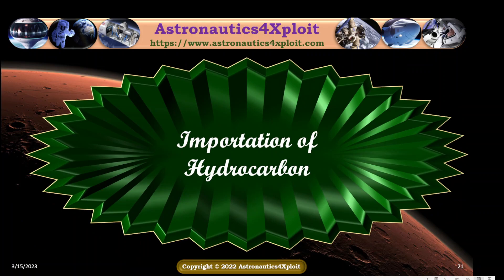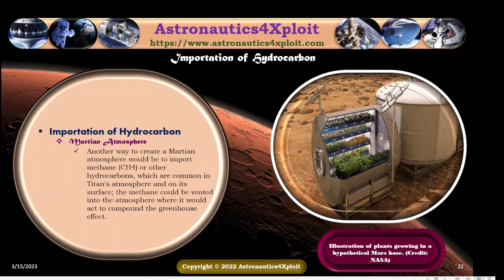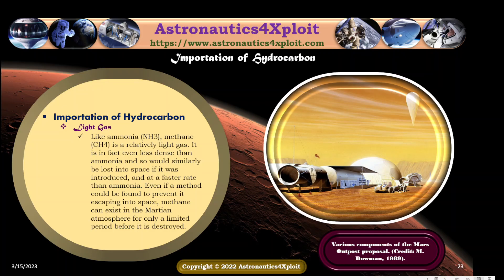Importation of hydrocarbon is another proposal. Another way to create a Martian atmosphere would be to import methane and other hydrocarbons, which are common in Titan's atmosphere and on its surface. The methane could be pumped into the atmosphere where it will act to compound the greenhouse effect. Like ammonia, methane is a relatively light gas — in fact even less dense than ammonia — and would similarly be lost into space at a faster rate than ammonia. Even if a method could be found to prevent it escaping into space, methane can exist in the Martian atmosphere for only a limited period before it is destroyed.